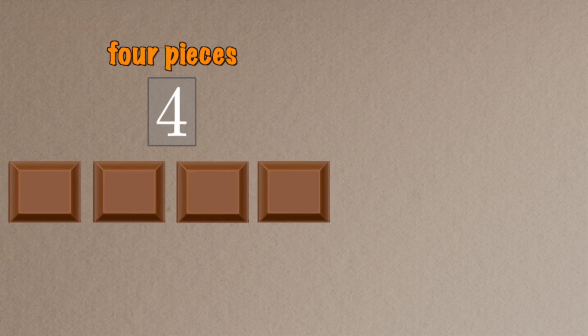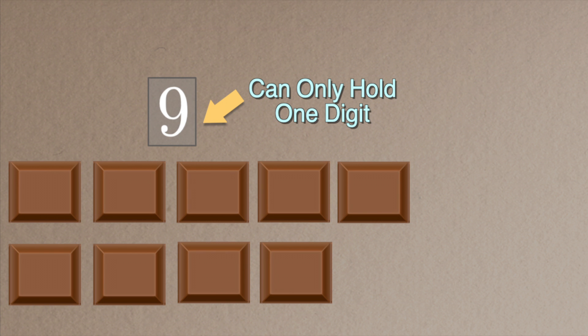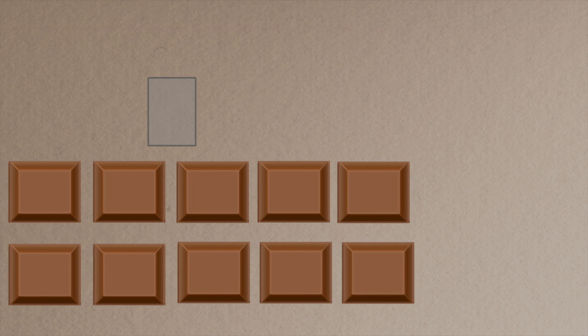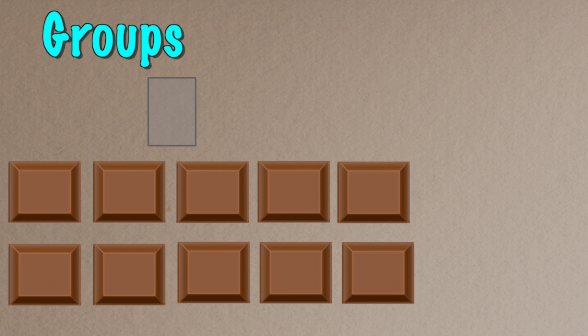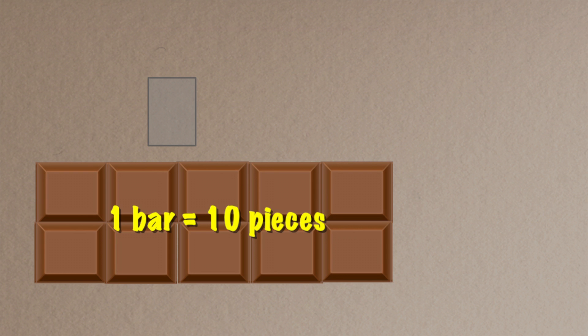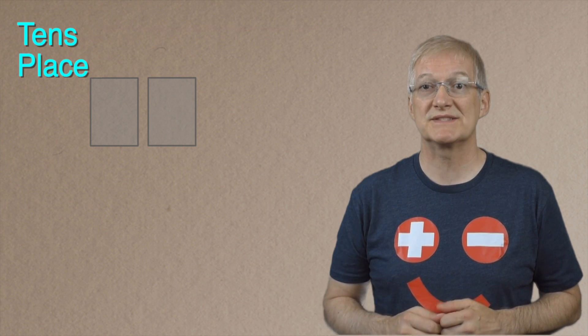As we start adding chocolate we can update our number to represent how many pieces of chocolate we have. But what happens if I want to add an extra piece? My number place can only hold one digit at a time and it already is holding nine, which is the largest digit that we have. When I add an extra piece I've got a problem, but I can solve this problem using groups. So when I add that extra piece I now have 10 pieces of chocolate, so I'm going to group that together into a bar of chocolate — or one group of 10. And I'm simply going to add an extra number place to the left of my existing number place to count how many groups of 10 I have.